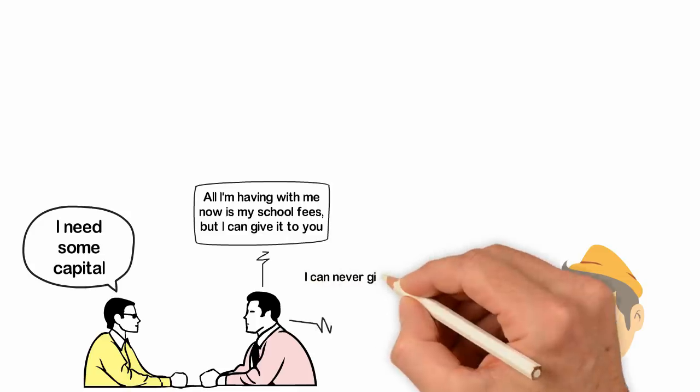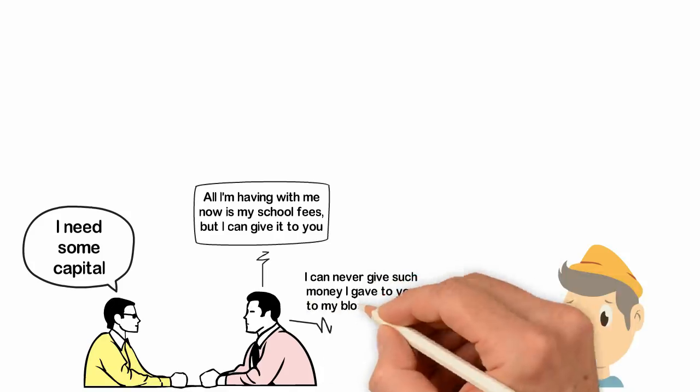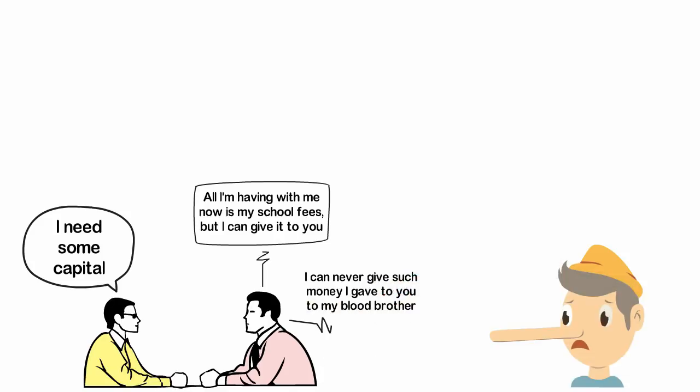And he told me something. He said he can never give such money he gave to me to his blood brother and the reason is that he didn't trust them. You have to be trustworthy if you want to get other people to invest in you.